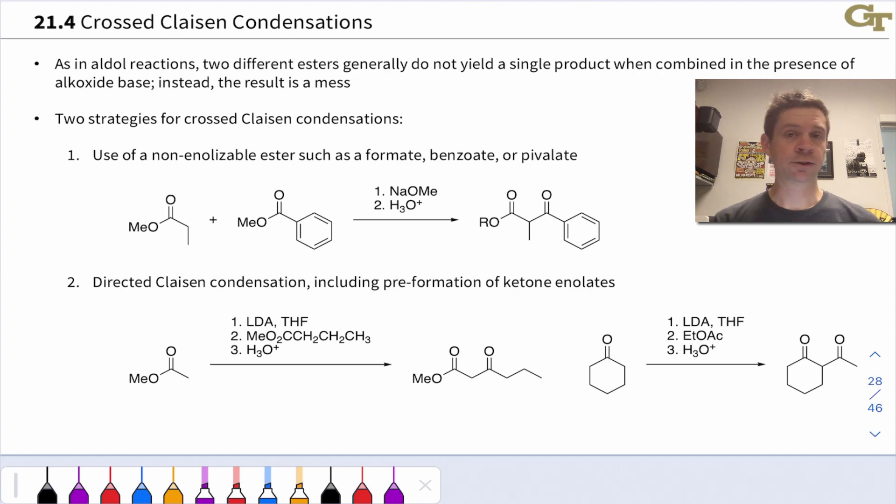In general, if we just take two different esters and mix them up with alkoxide base, we're going to get a mess of condensation products with the two esters acting as nucleophiles and electrophiles, dimerization, and cross-coupling. All four of those possibilities are going to make themselves known.